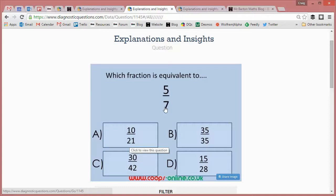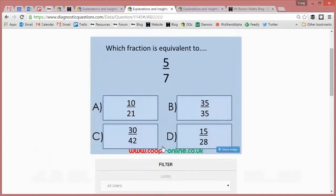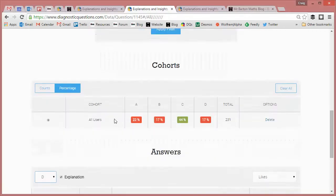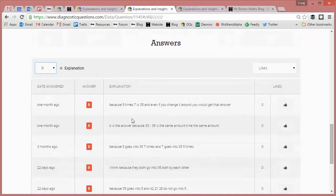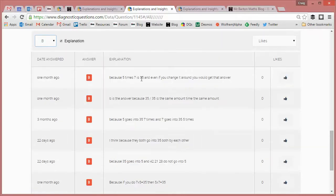But what about B? Why on earth are 17% of people saying 35 over 35? Let's have a look at this particular case. I think this is absolutely fascinating because 'five times seven is 35. B is the answer because 35 over 35 is the same amount times the same amount.'